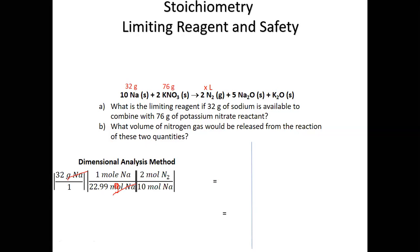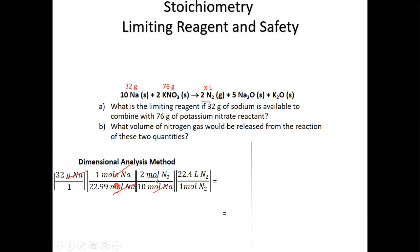Next, apply the mole ratio from the balanced equation: 2 moles of N₂ for every 10 moles of Na. This converts moles of sodium into moles of nitrogen. Then convert moles of N₂ to liters using 22.4 L/mol at standard temperature and pressure. The result is 6.2 liters of nitrogen from 32 grams of sodium.